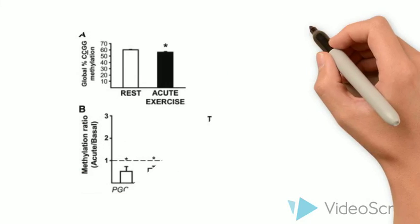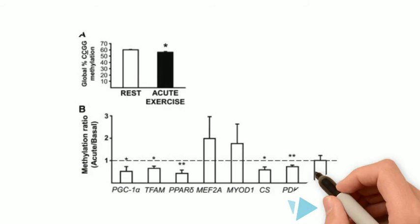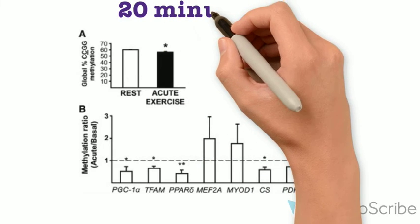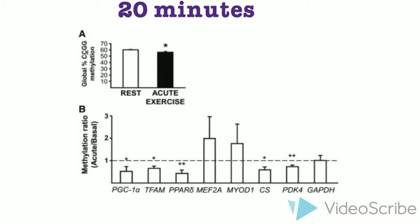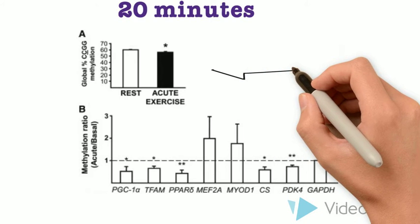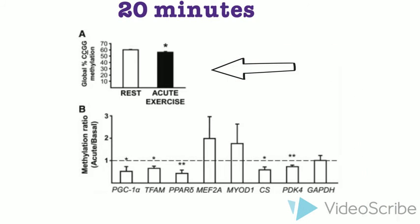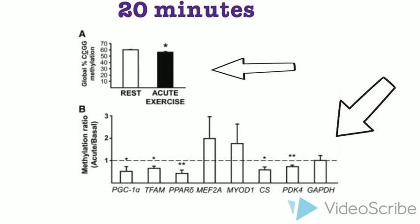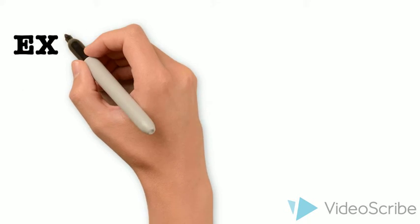The first graph compares a person resting to someone who has exercised for 20 minutes. Researchers were able to find that there was a decline in the methylated promoters shown in the first graph. They then went on to study the specific promoters in which they noticed that there was a decrease in the DNA methylation of the promoters of metabolic genes in those people who exercised for only a short 20 minutes.